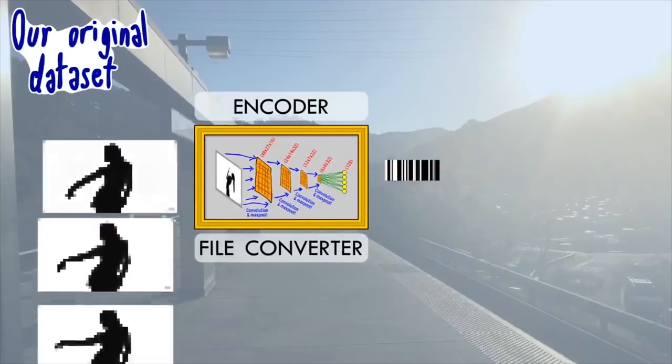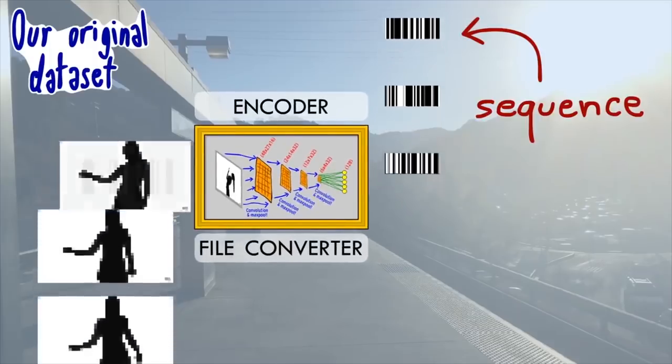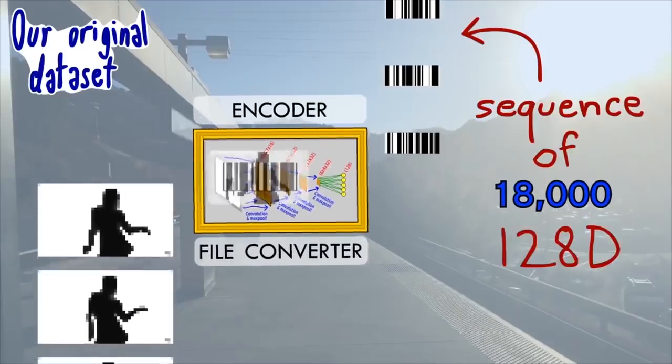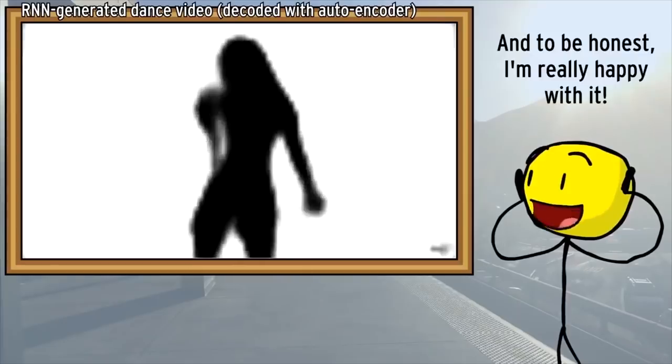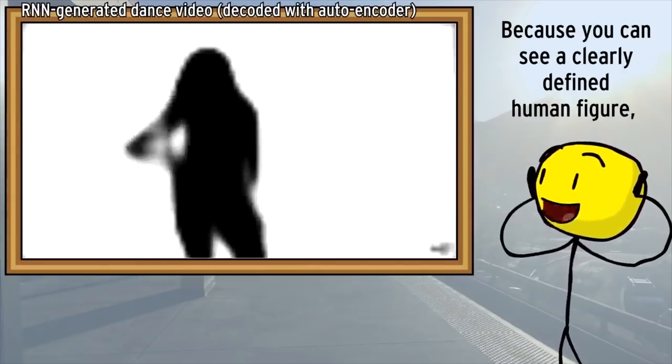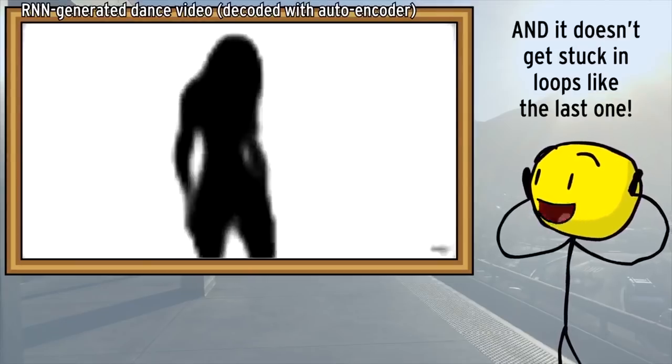He took a YouTube video, split it up into many different frames, and fed it to a recurrent network. Because recurrent networks can learn sequences, it learned a generalized pattern for the dance moves it was fed and eventually was able to dance in the style of what it was trained on.